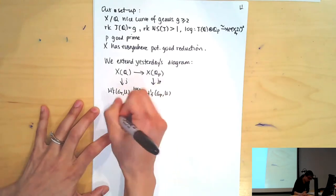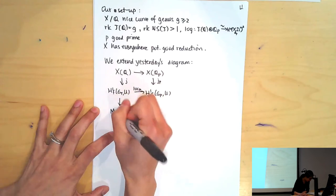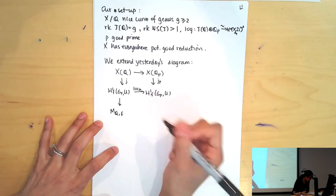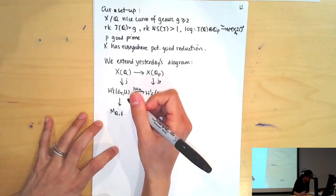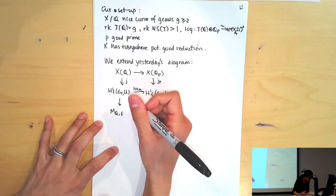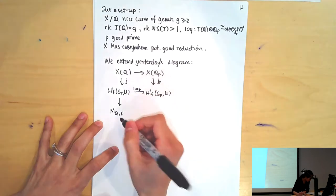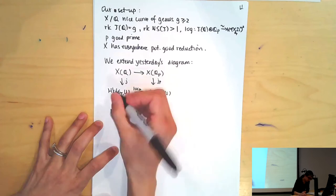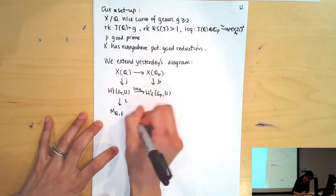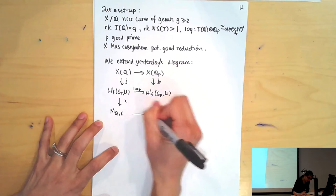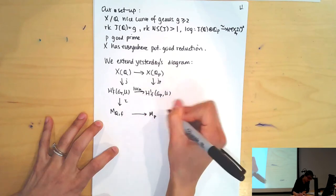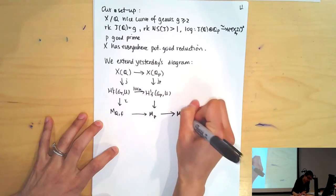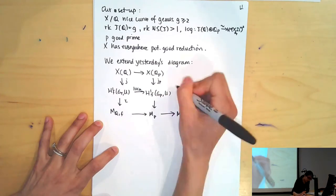We also have this local unipotent Kummer map. We'd like to map here into our space of mixed extensions of étale global Galois representations with three graded pieces, Q_p, V, Q_p(1), crystalline at p. We'll do this by twisting. We have our local objects here.